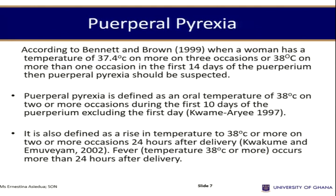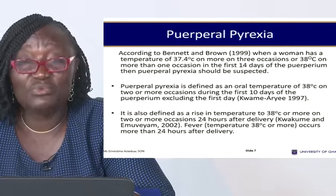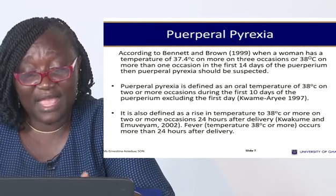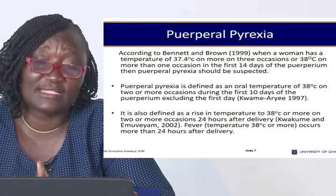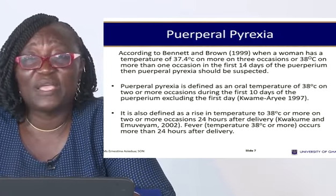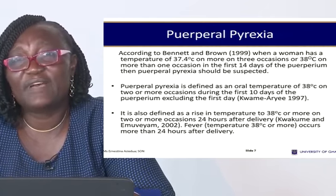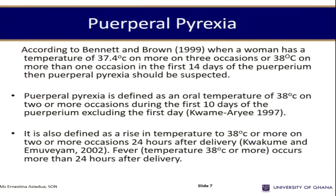There are many types of puerperal infections — we can't exhaust all of them as this could be a whole semester course. Puerperal pyrexia is defined as an oral temperature of 38 degrees Celsius on two or more occasions during the first 10 days of the puerperium, excluding the first day.